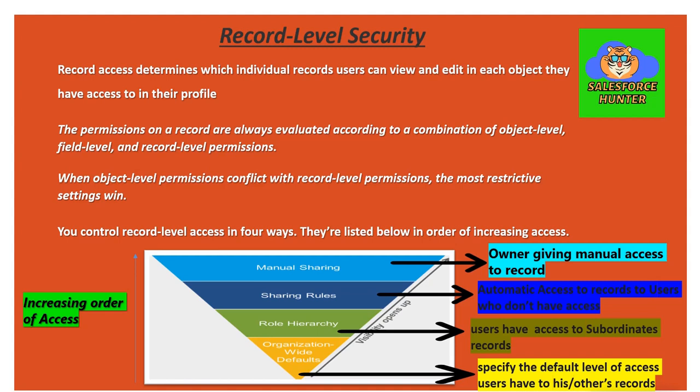In simple terms, suppose there is a user who created an account record — he is the owner of that record. With record level security, we are determining whether other users who are not the owner of that record would be able to access it or not. That is what record level security means.